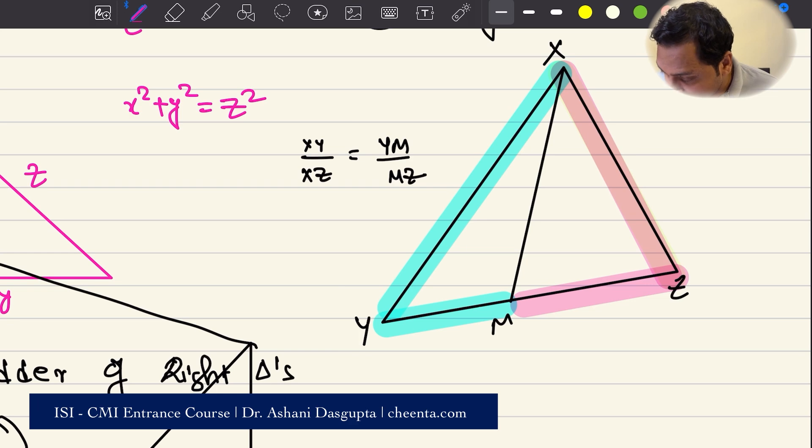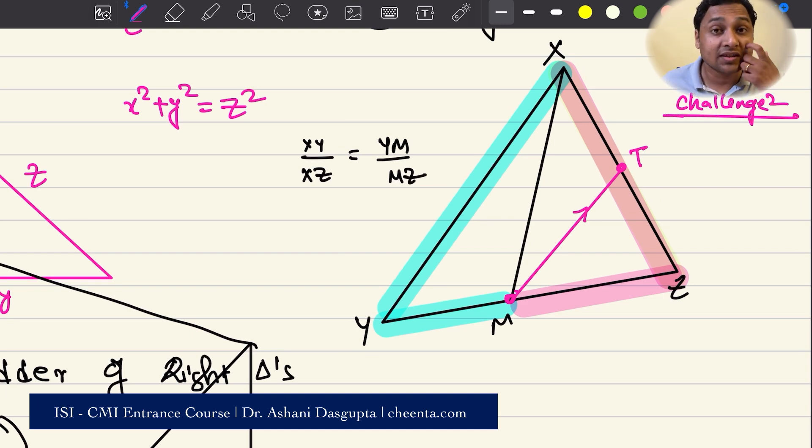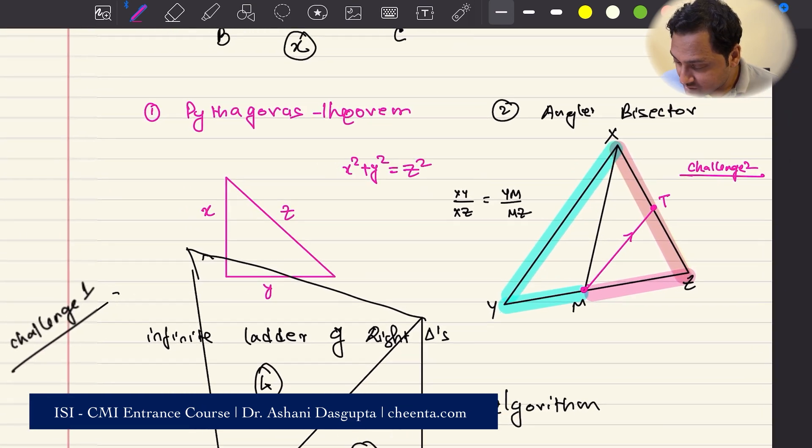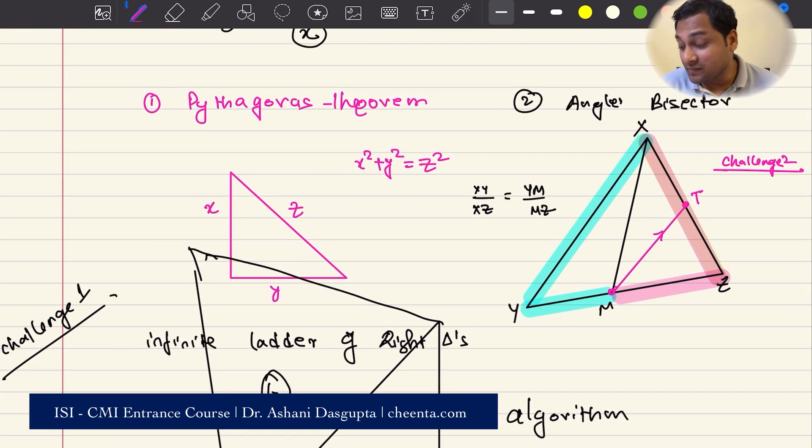So you can easily prove this. I'll give you a line of the proof. From the point M, you draw a line that is parallel to XY. Let's suppose it hits XZ at T. Now with this construction, you can try to prove the angle bisector theorem. This is challenge two. Either put it in the comment section or go to the Cheenta community and post it there. You can create a new topic under Mathematical Olympiads. So with these two theorems, Pythagoras theorem and angle bisector theorem, we can now proceed and solve the problem that we want to solve.